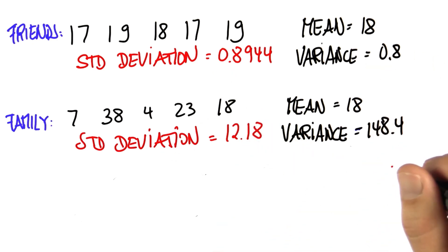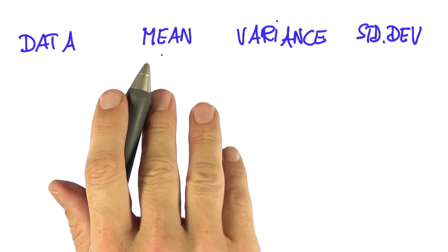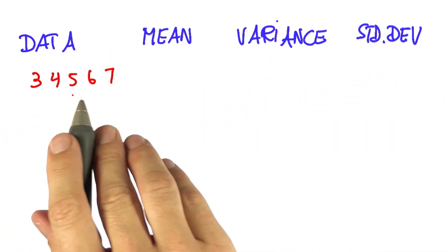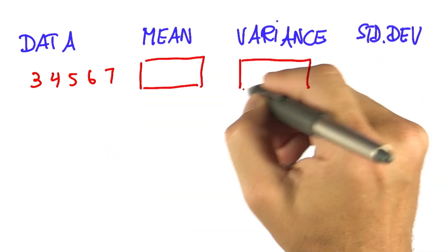So let's practice this. I'll give you a couple of quizzes now. I'll give you data. I want you to compute the mean for me, the variance, and the standard deviation. 3, 4, 5, 6, 7. Please fill in all three of those values.